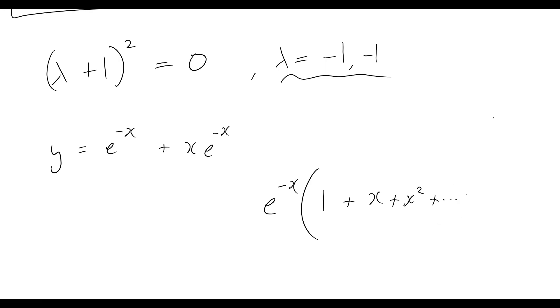And then we'd have brackets, and inside that we would now have 1 plus x plus x squared plus dot dot dot, so on and so forth, until we get to plus x to the power of n minus 1. Okay, so for n repeated roots, this is what your general solution will be, where obviously instead of just simply negative x, we'll just have that lambda value there.